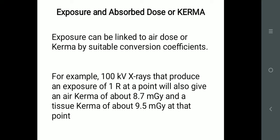The relationship between exposure, absorbed dose, and kerma: exposure can be linked with air, but kerma will be linked only with charged particles — protons, neutrons, X-rays, and gamma rays. For example, if you have 100 kV X-ray, you can produce 1 mR of radiation at a given distance. At least the air kerma will be 8.7 mGy and tissue kerma will be 9.5 mGy. So air and tissue will be more affected.